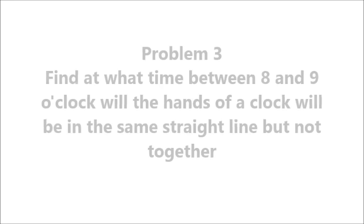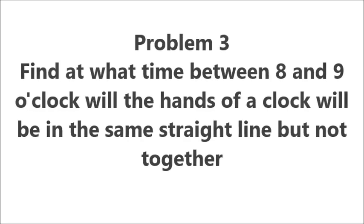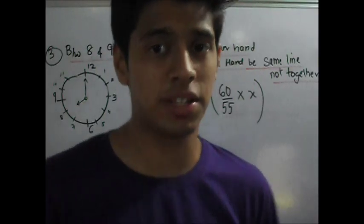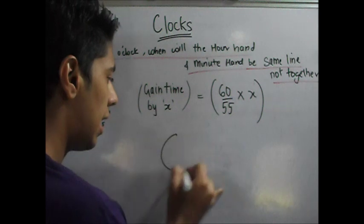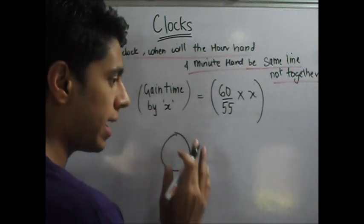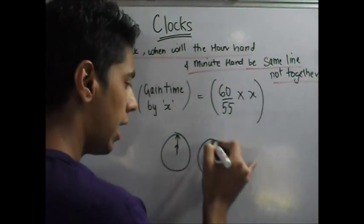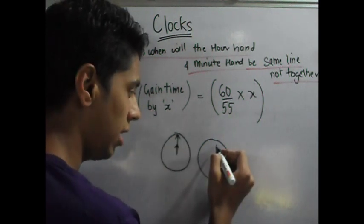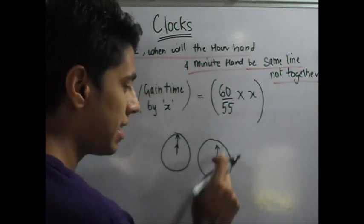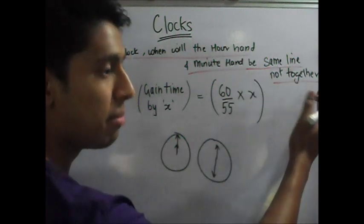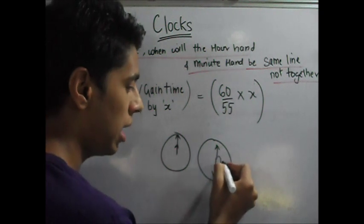Problem 3: Find at what time between 8 and 9 o'clock will the hands of a clock be in the same straight line but not together. What this means is that while the hands coincide once every hour, there is also a moment — near the 30-minute mark — where the hour hand and minute hand are in the same line but pointing in opposite directions, not together. They are basically asking when the difference between the hour and minute hand will be 30 minutes.